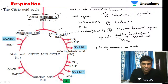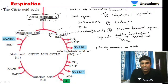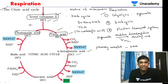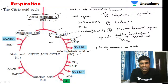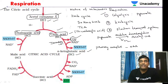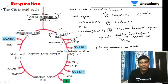Citric acid, a six-carbon compound, is then reduced to a five-carbon organic acid called alpha-ketoglutaric acid. During this step, NAD+ is converted into NADH + H+, and there is liberation of carbon dioxide. So this is also a decarboxylation reaction — citric acid is decarboxylated to alpha-ketoglutaric acid.